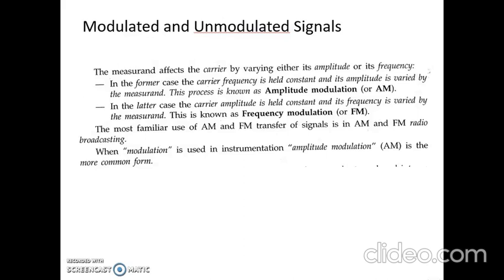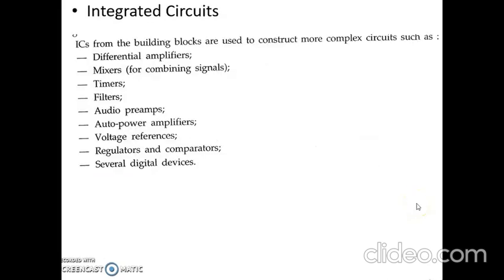The main applications of AM and FM are in radio broadcasting. Amplitude modulation is very commonly used in the process of modulation. Integrated circuits (ICs) are groups of circuit elements combined to perform specific functions. Common elements used in ICs are transistors, diodes, resistors, and sometimes capacitors.